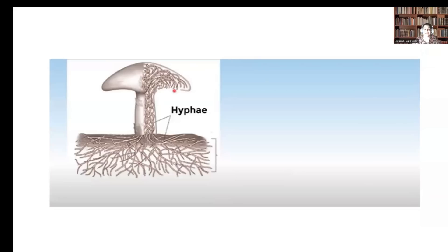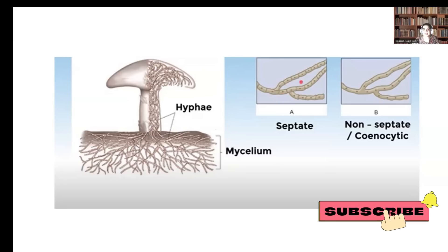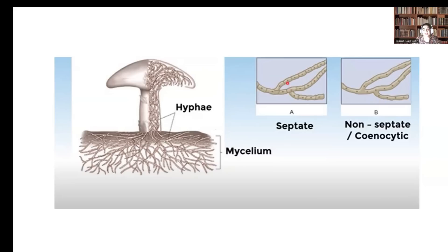Fungi contain structures called hyphae, and the root-like network is called mycelium. Mycelium can be septate, where it is divided into different cells each containing one nucleus, or non-septate (coenocytic), where no septa are present and a single cell contains many nuclei in its cytoplasm.